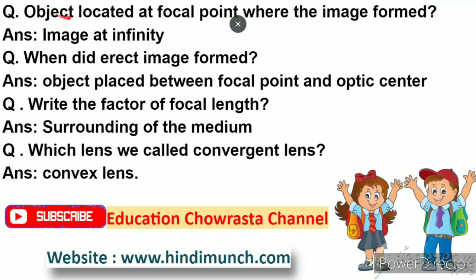Next question: when the object is located at the focal point, where is the image formed? The answer is: the image forms at infinity. Next question: when is an erect image formed? The answer is: when the object is placed between the focal point and the optic center. When the object is placed between the focal point and P (optic center), an erect image is formed.